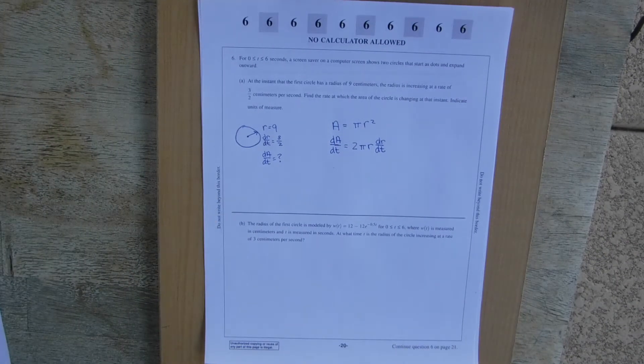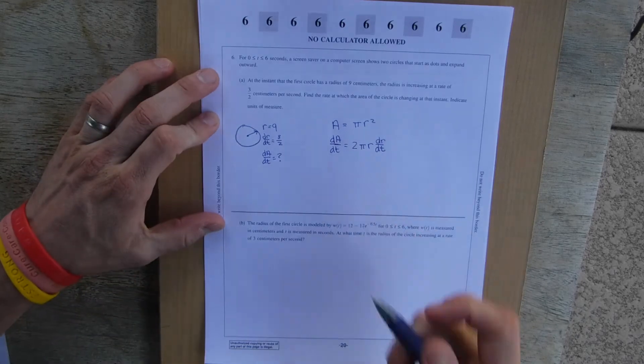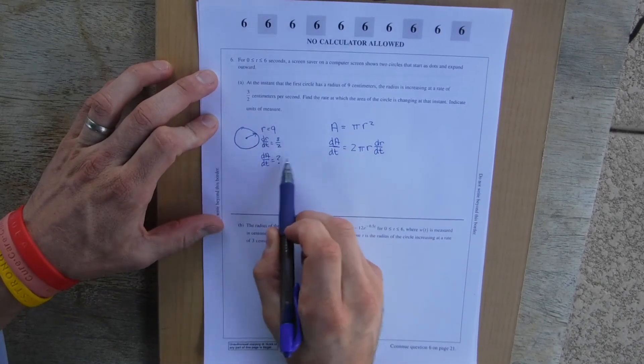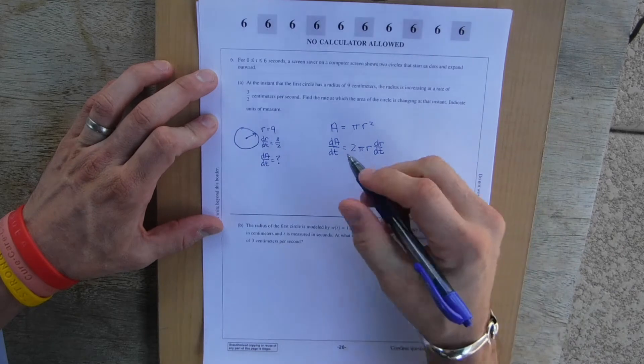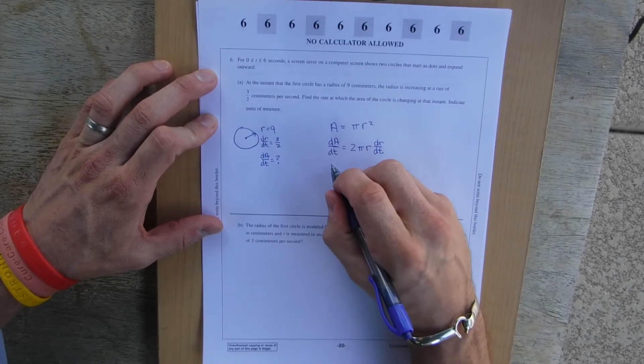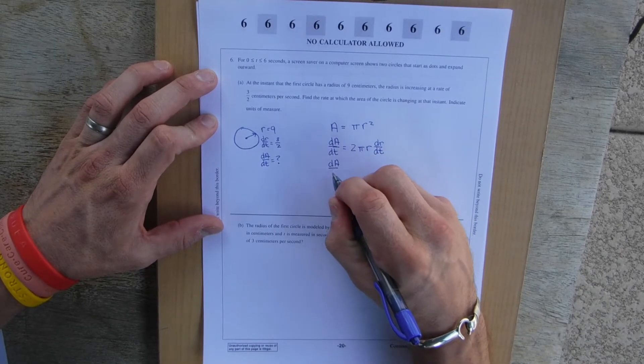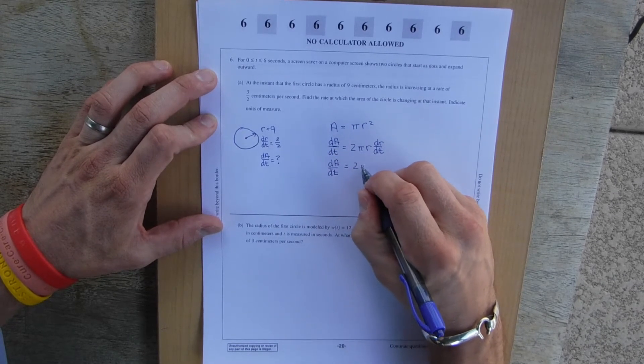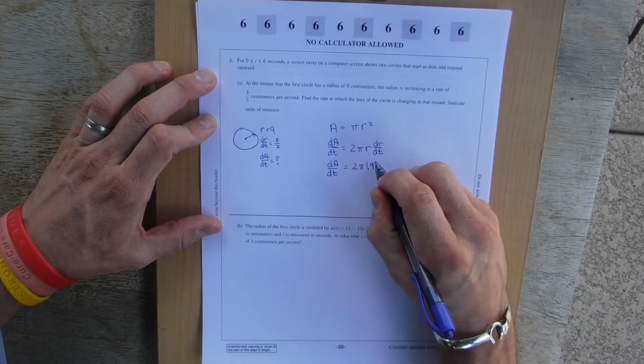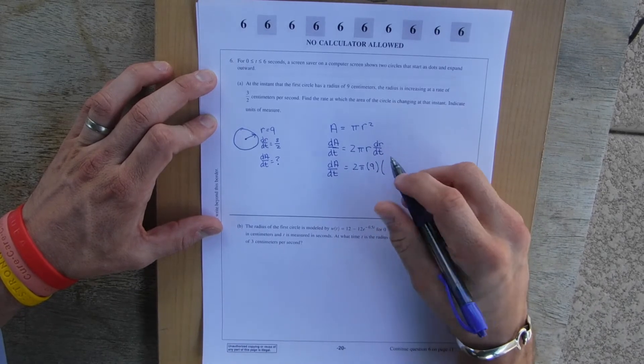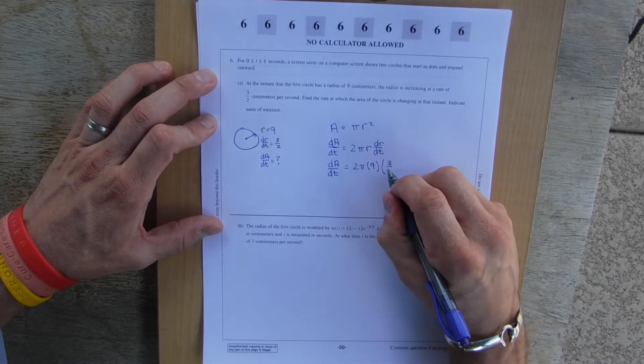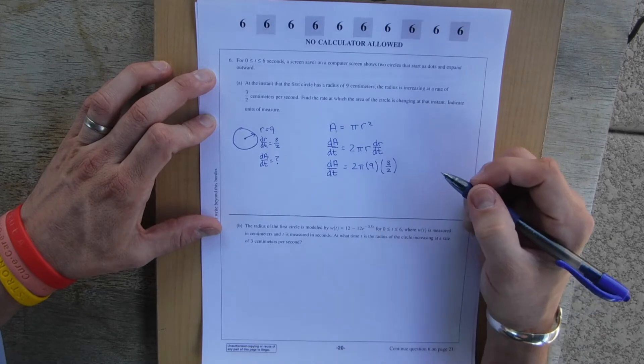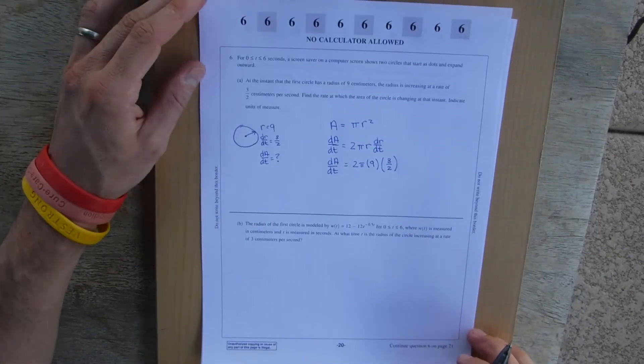So here we go. Derivative of A is 1, so it would be 1 dA/dt. Okay, here we're taking the derivative of r. So this is going to be 2πr. Good to go. However, because we took a derivative of r, dr/dt is attached. Alright, so we have the derivative. And now what we do is we take these values and now we plug them into where we need.